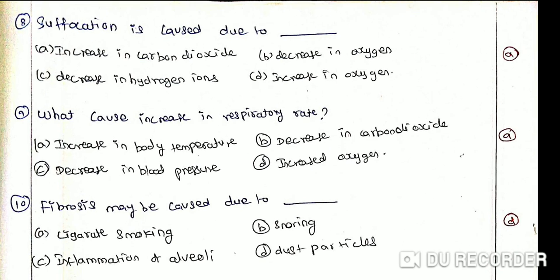What causes increase in respiratory rate? Option A: Increase in body temperature. Option B: Decrease in carbon dioxide. Option C: Decrease in blood pressure. Option D: Increase in oxygen. The correct answer is option A, increase in body temperature.